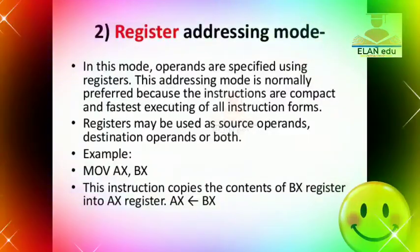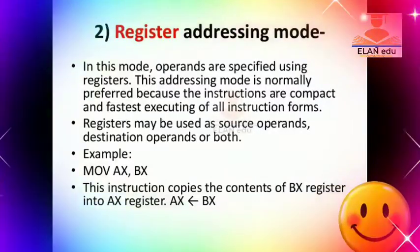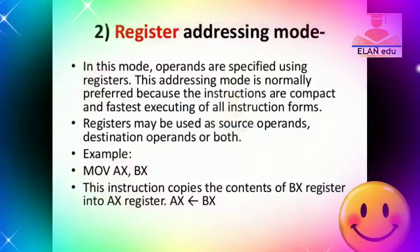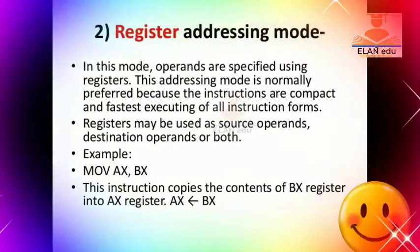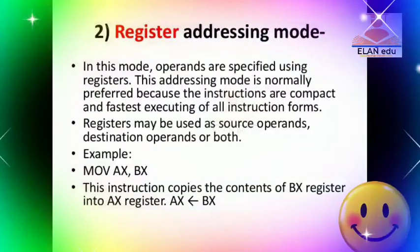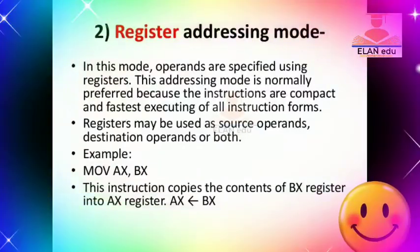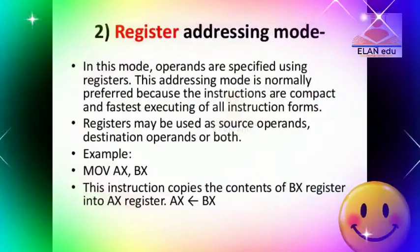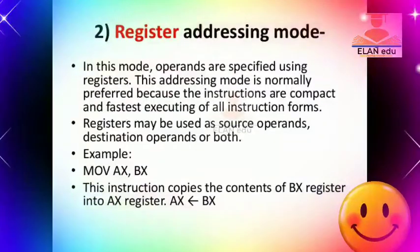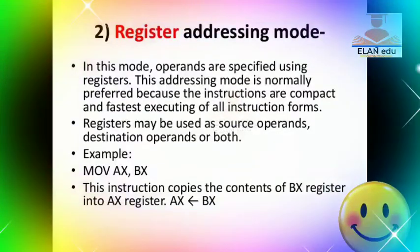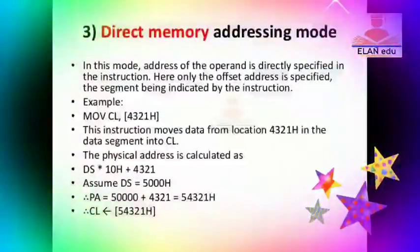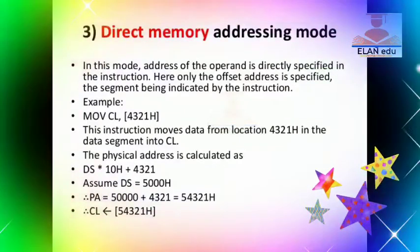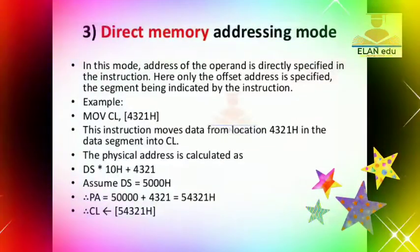Here is the Register Addressing Mode. In Register Addressing Mode, for example, AX is a 16-bit register and BX is a 16-bit register. The instruction MOV AX, BX moves the BX value into AX. We use the register to specify the operand for an instruction. Inside the register is the correct offset address, and this is also a segment.